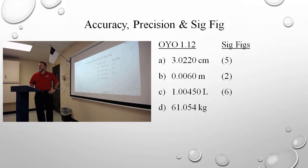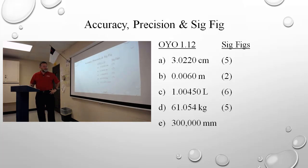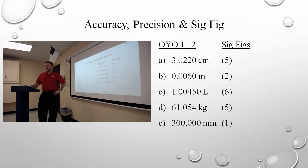Five. You can see that the zero is embedded between significant figures, so it will be significant. One — why are all those zeros insignificant? They're trailing zeros, aren't they? They're not to the right of the decimal.